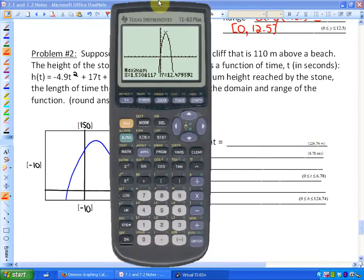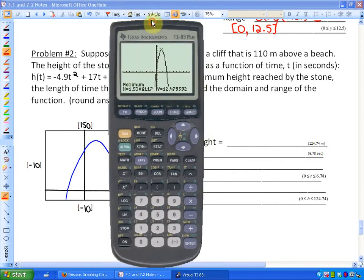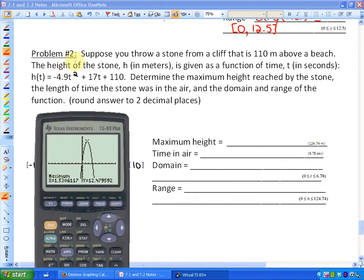This problem states the following. Suppose you throw a stone from a cliff that is 110 meters above a beach. The height of the stone in meters, h in meters, is given as a function of time t in seconds. h is negative 4.9 t squared plus 17t plus 110.